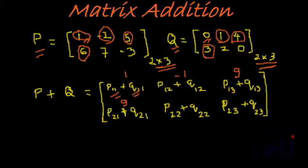Now P22 is 7, Q22 is 2, so 7 plus 2 is 9. And P23 is minus 3 and Q23 is 0, so minus 3 plus 0 is minus 3.